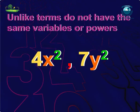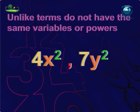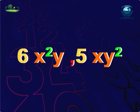Unlike terms: Unlike terms are two or more terms that are not like terms. That is, they do not have the same variables or powers. For example, 4x square and 7y square. Similarly, 6x square y and 5xy square. In both the cases, as we can observe, the variable parts are not similar.